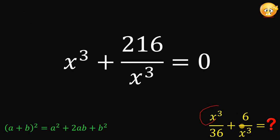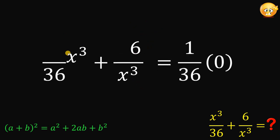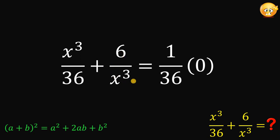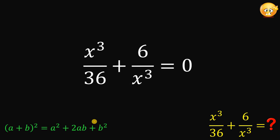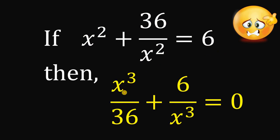We have x cubed in the numerator and denominator on both sides, so to make this equation identical to our target expression, we multiply both sides by 1 over 36. Distributing 1 over 36 to x cubed plus 216 over x cubed gives us x cubed over 36 plus 6 over x cubed. On the right-hand side, 1 over 36 times 0 is still 0. Therefore, if x squared plus 36 over x squared equals 6, then the numerical value of x cubed over 36 plus 6 over x cubed equals 0.